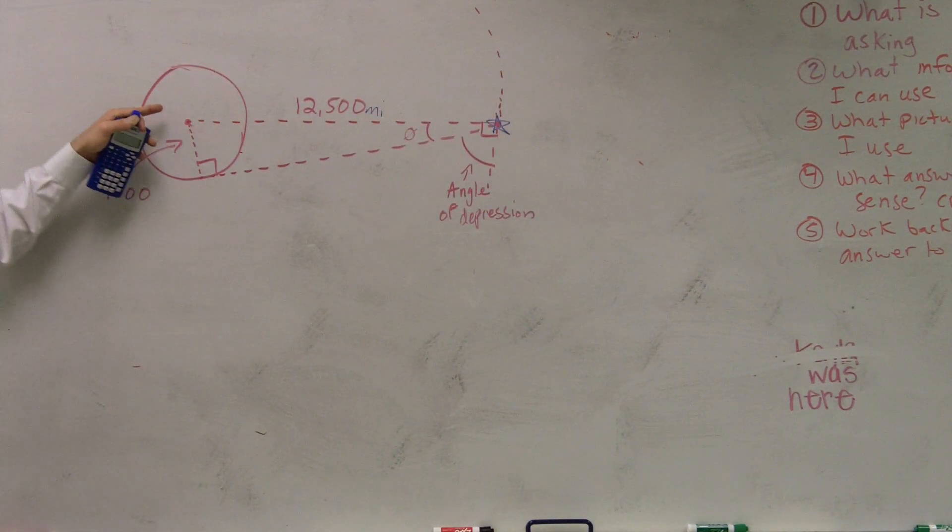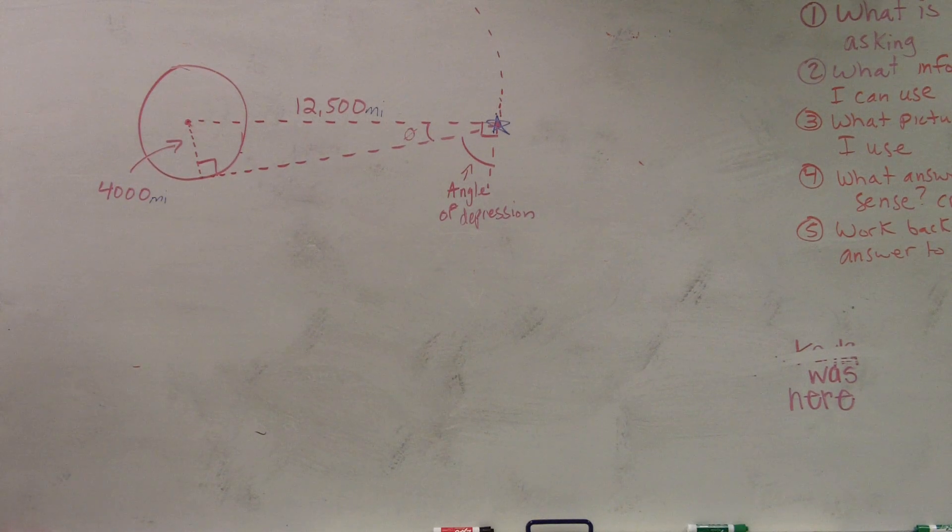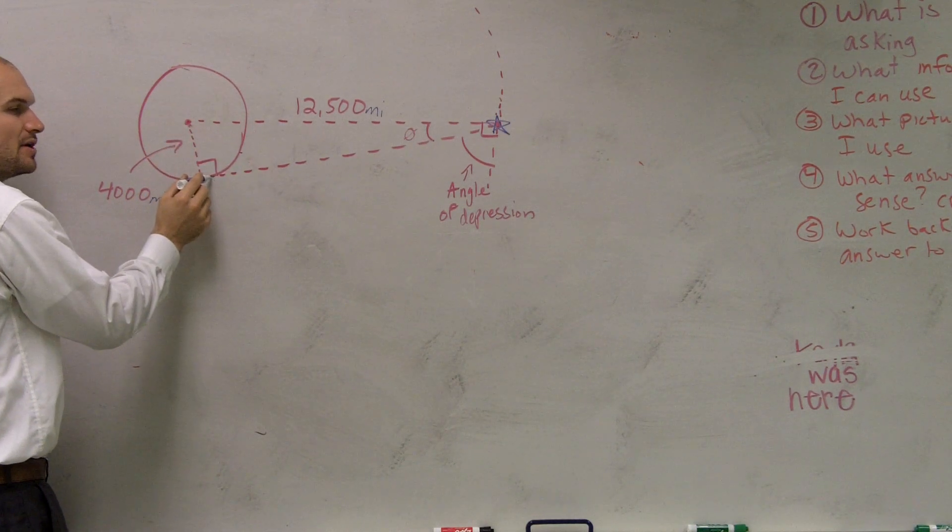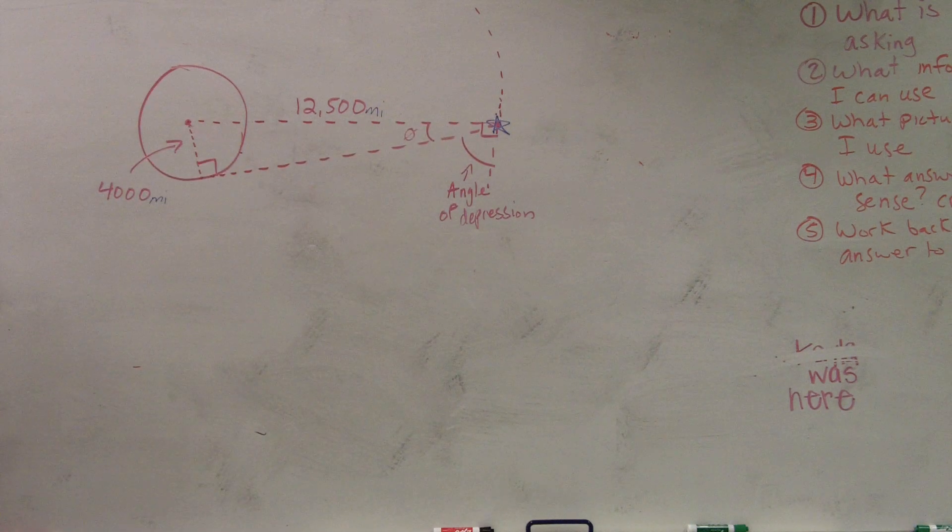Then they say the radius of the Earth is 4,000 miles. So we're able to draw a right triangle down from the center of the Earth and the base of the Earth out to your satellite.